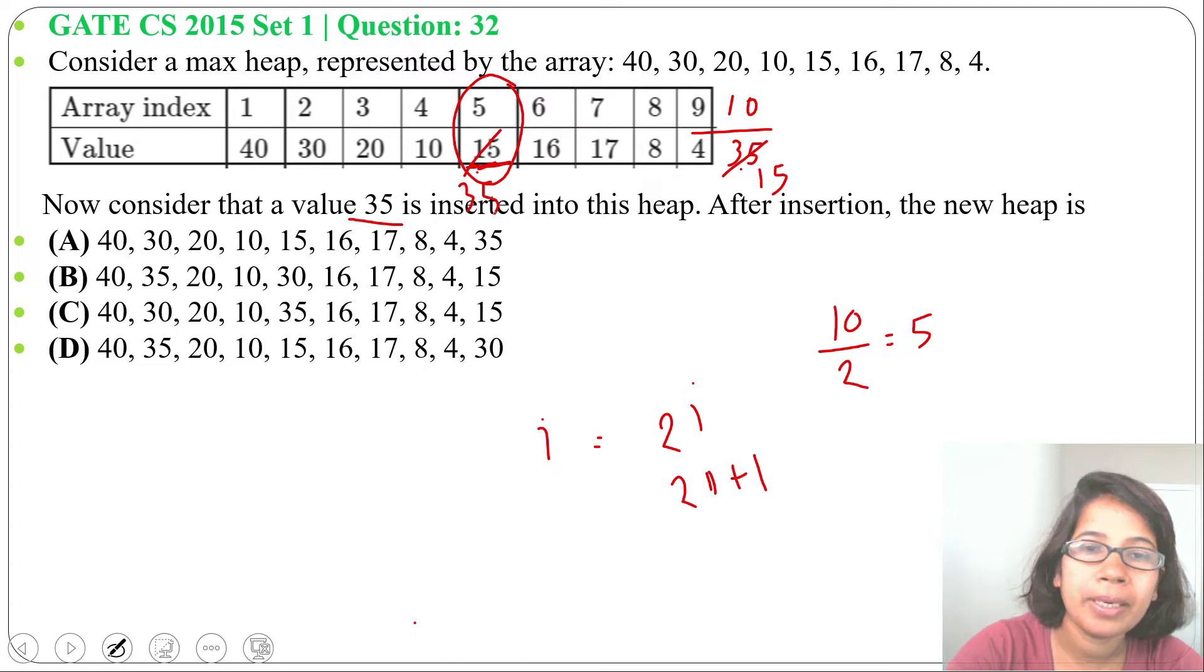Next, what will be the parent of index 5? Index 5's parent will be index 2, so it is 2i plus 1. Index 5 is the right child of index 2. Here the parent is 30. 35 is greater than 30, so we'll swap these two. 35 will come here and 30 will come here. Now check which option contains this: 40, 35, then 20, 10, then 30. The answer is option B.